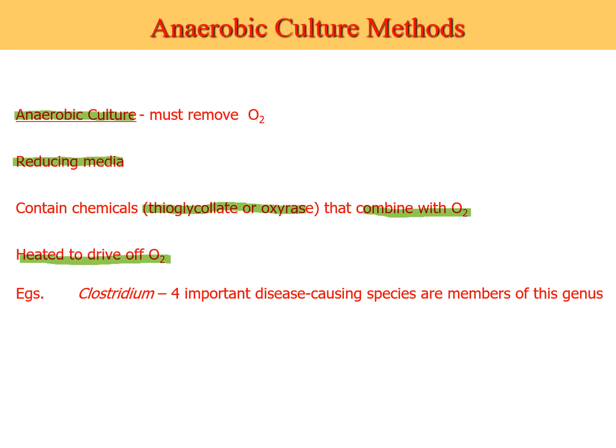There are four important disease-causing species of the genus Clostridium you should know: Clostridium botulinum causes botulism, a type of food poisoning; Clostridium perfringens causes gas gangrene; Clostridium tetanus causes the disease tetanus; and Clostridium difficile causes colitis and diarrhea. That's anaerobic culture.